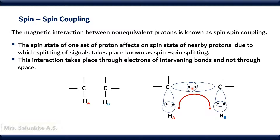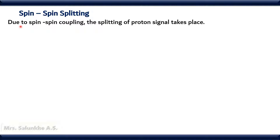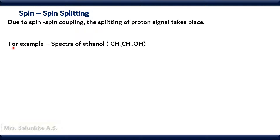The bond is made up of electrons and the magnetic interaction takes place through electrons of intervening bonds. Then we see what is meant by spin-spin splitting. Due to spin-spin coupling, splitting of proton signal takes place. For example, the spectra of ethanol.